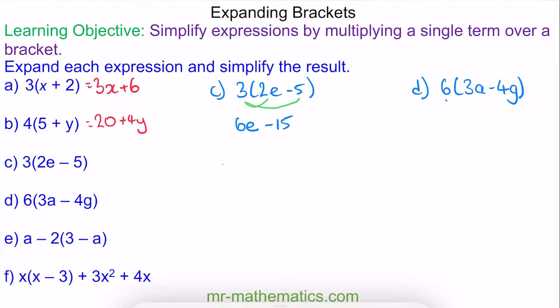And for question D, 6 times the 3a, which is 18a. And then the 6 times the negative 4g, while 6 times 4 is 24, and we have the g term.